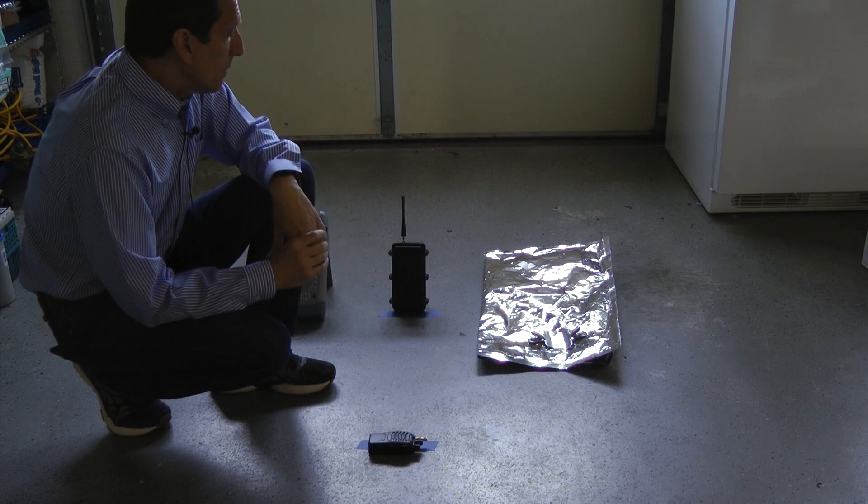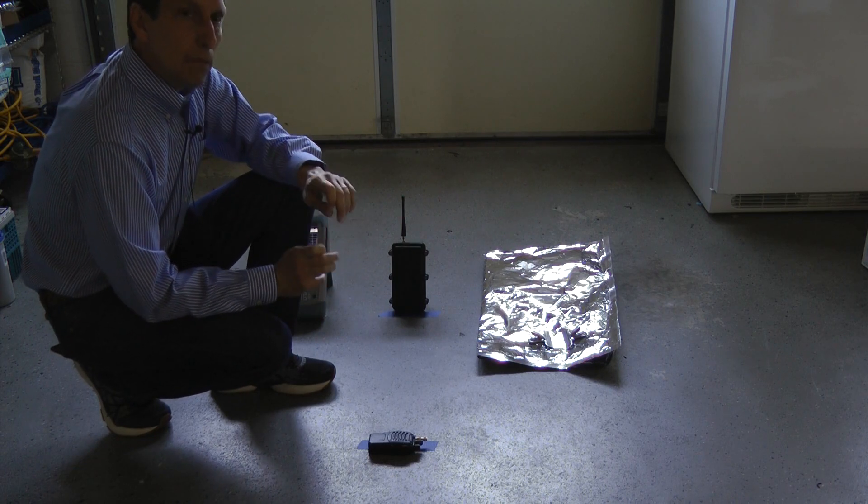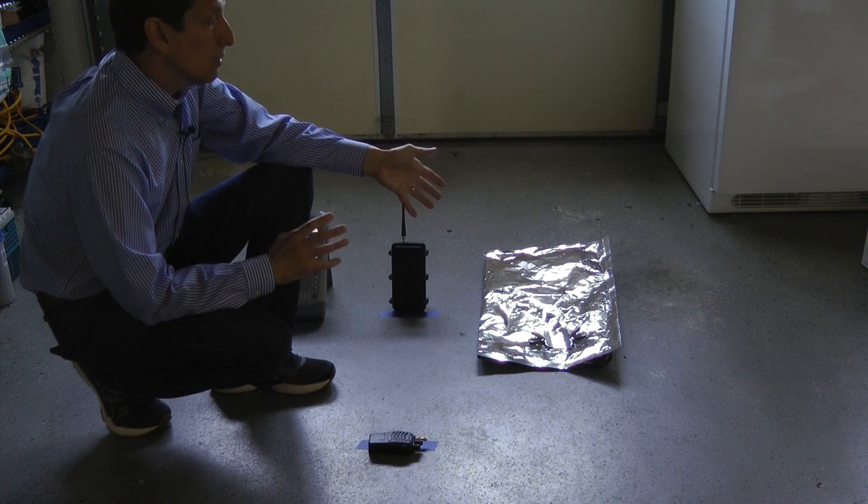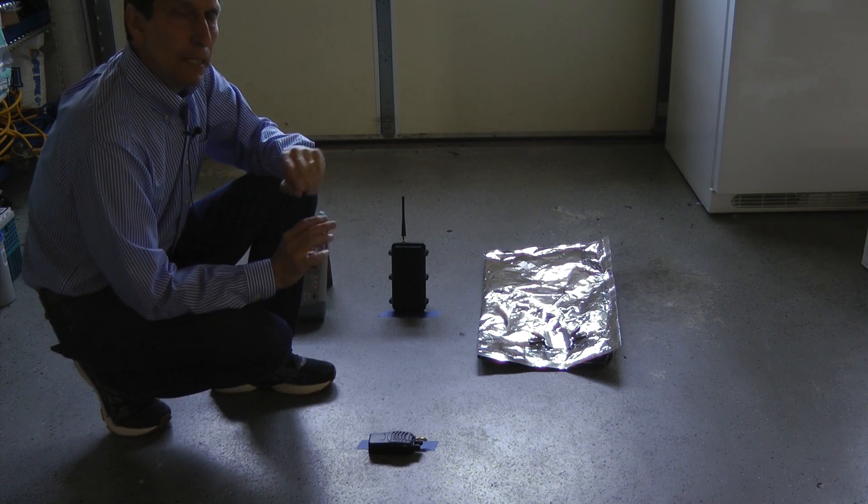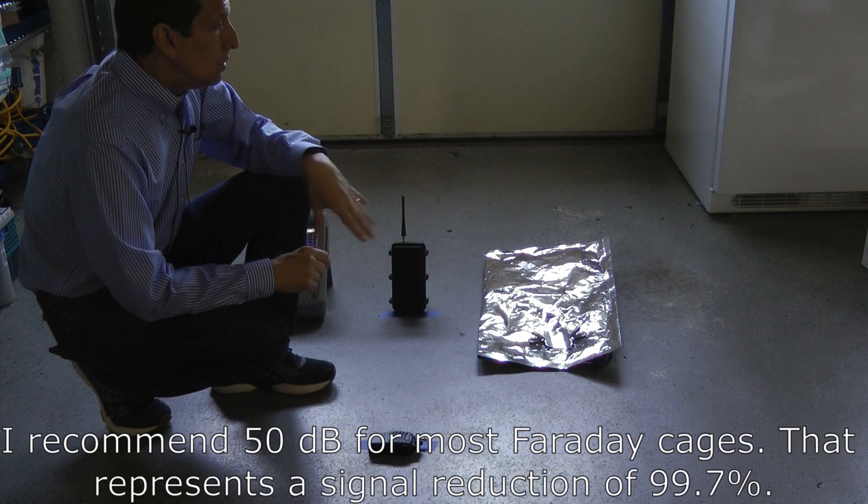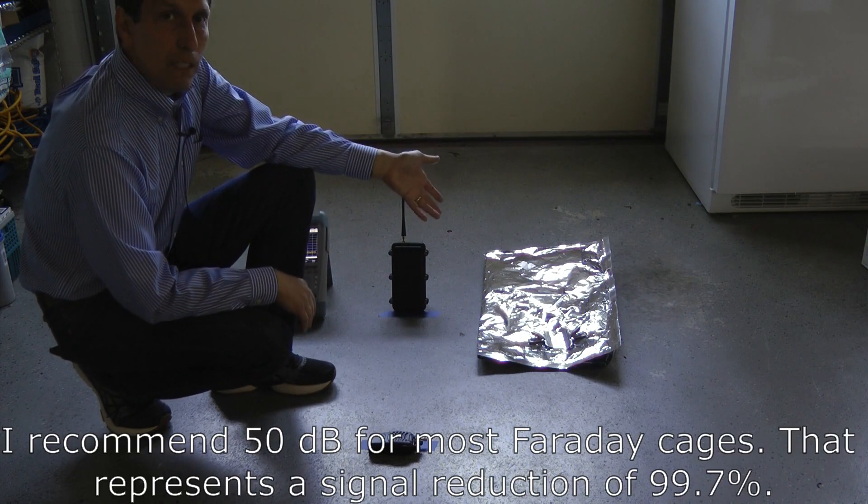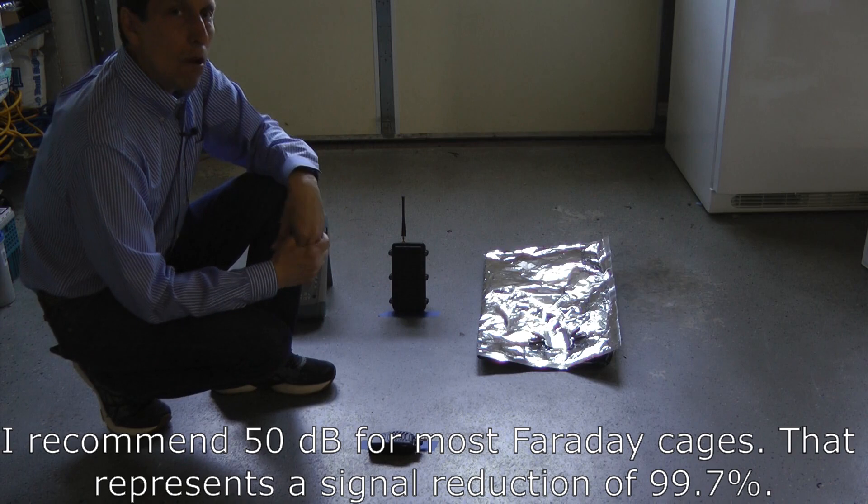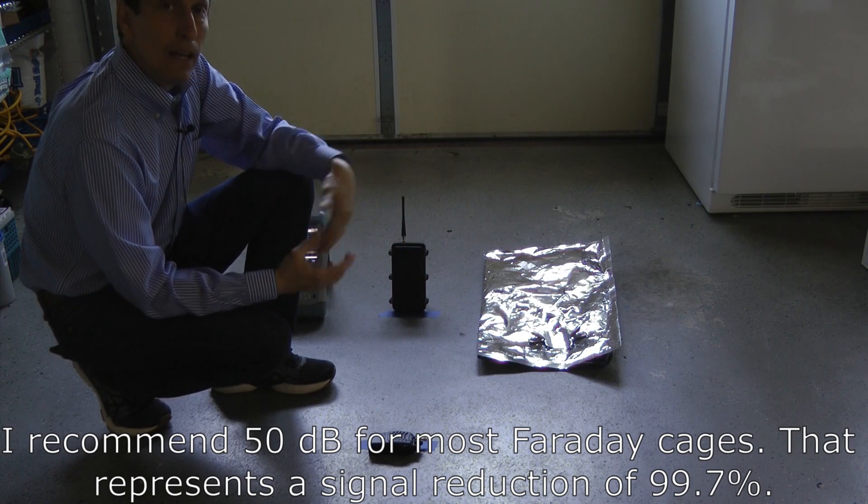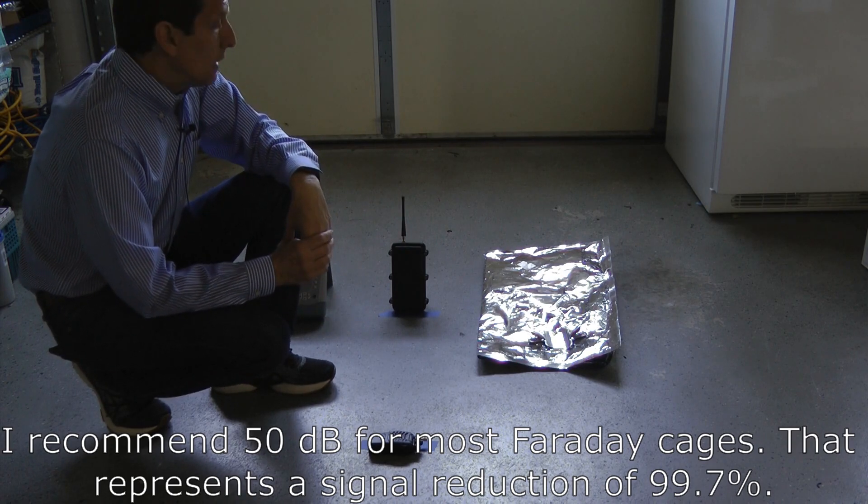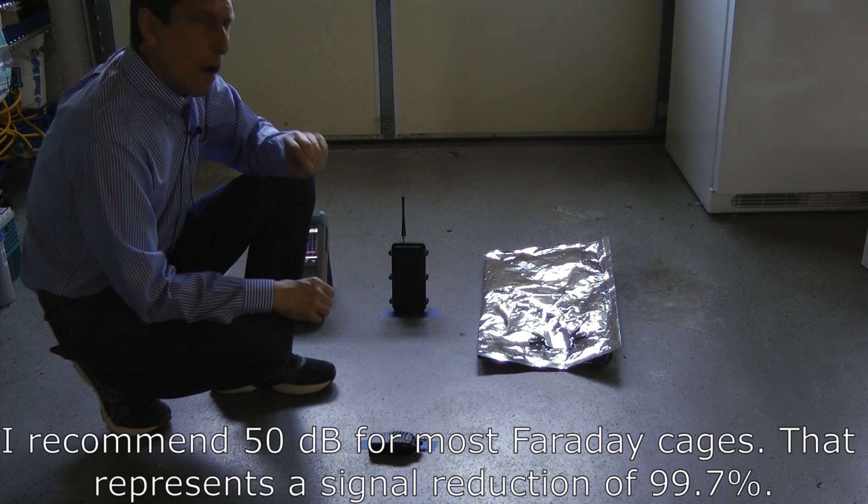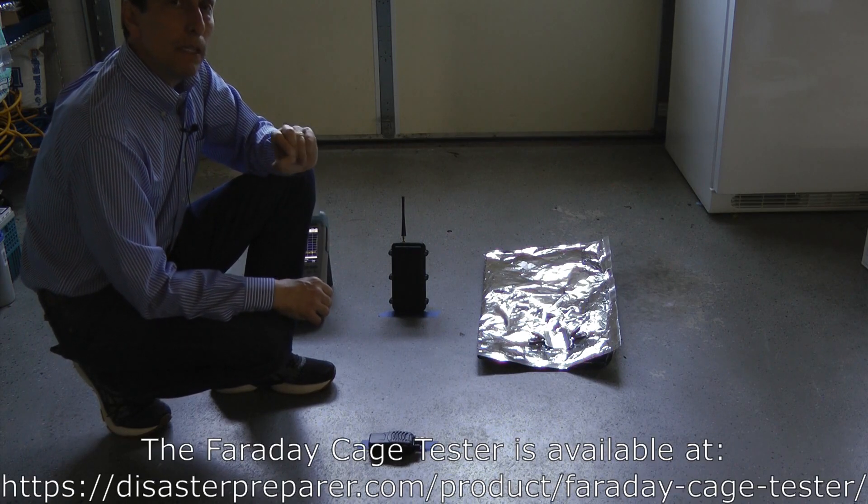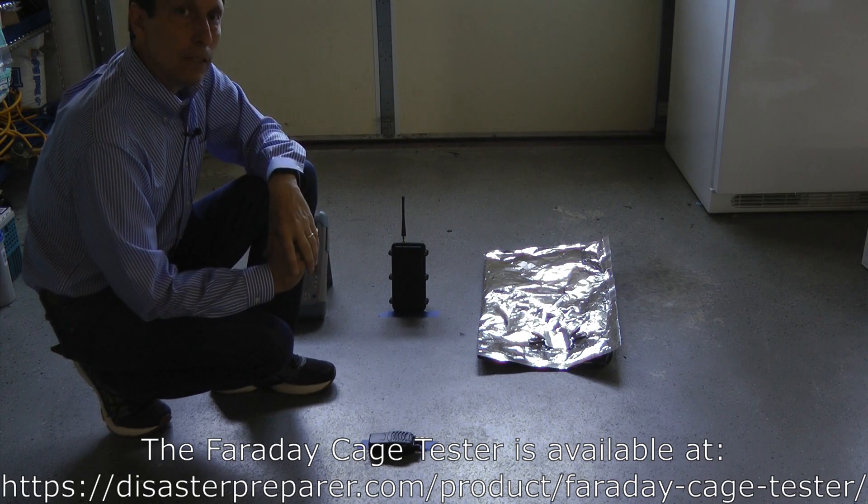The whole goal of the thing again is to get an estimate of the shielding effectiveness of something that you're trying to protect your electronics in. You don't have to be accurate to be within one or two dB. That really isn't that important. But you'd like to know, does it provide 50 dB of shielding or did I do something wrong and I'm really only getting 10 dB of shielding. That makes a big difference. So that's what we're trying to do. We're trying to do a real quantitative measurement that gives me an indication of how good my shielding is.